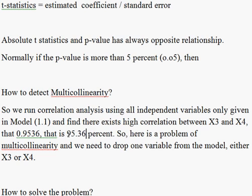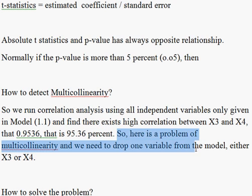After estimating the correlation analysis, we find that the correlation between x3 and x4 is the highest. That is why we shall be choosing x3 and x4 as the target variables. The correlation coefficient between x3 and x4 is the highest in this particular case, and as a result the problem of multicollinearity arises.